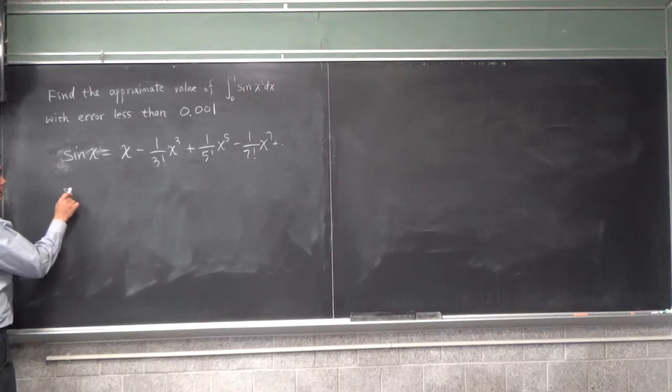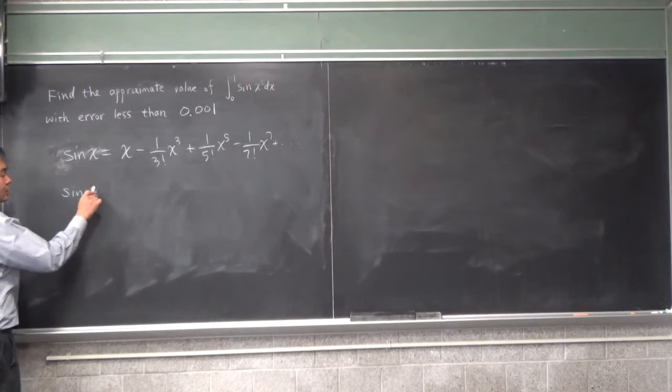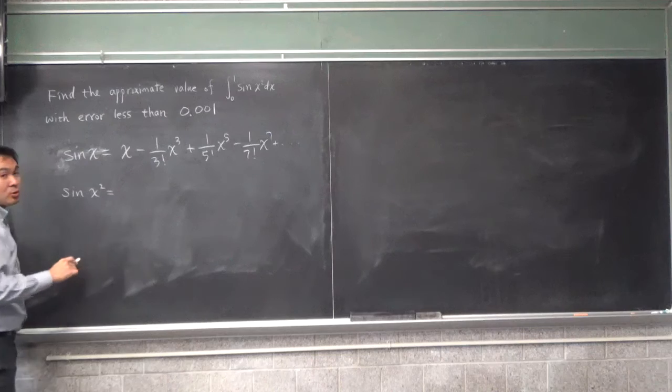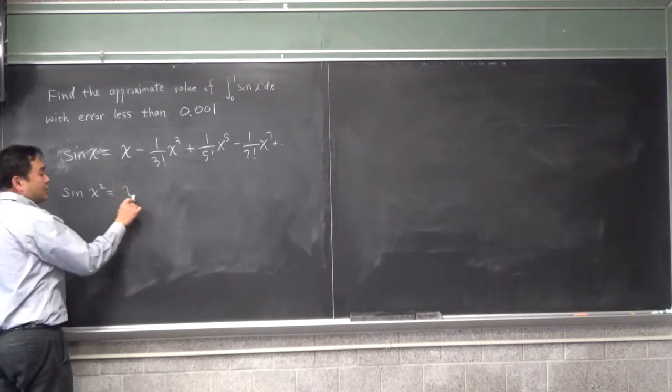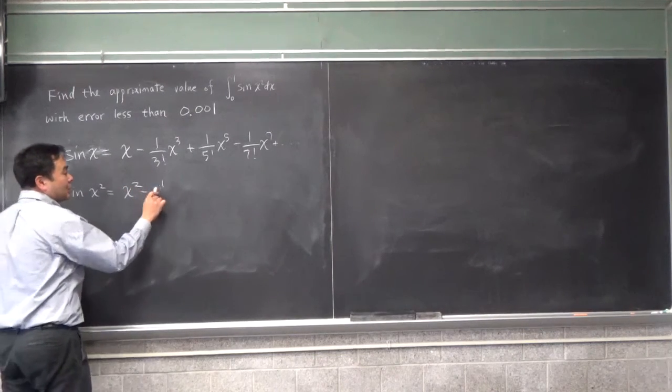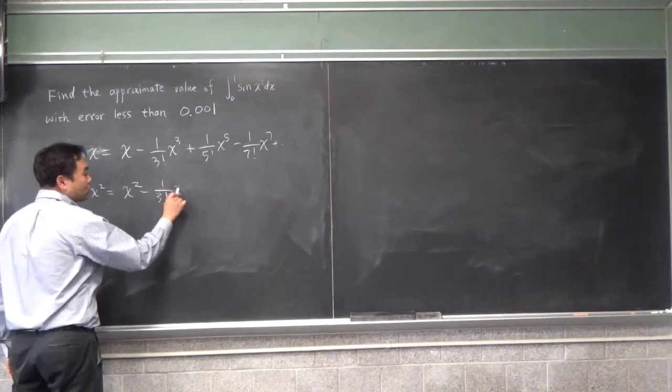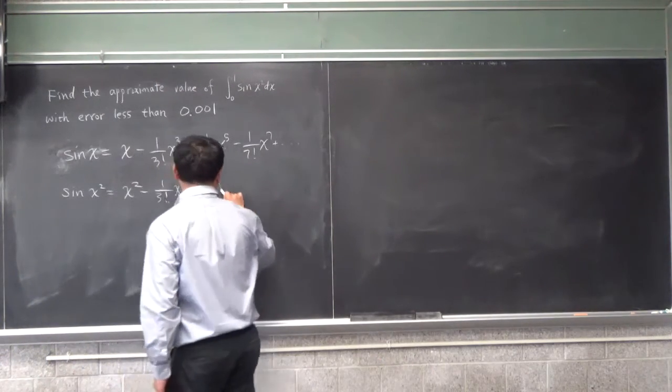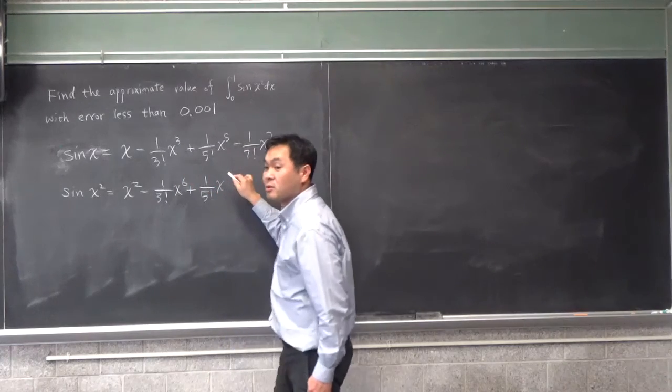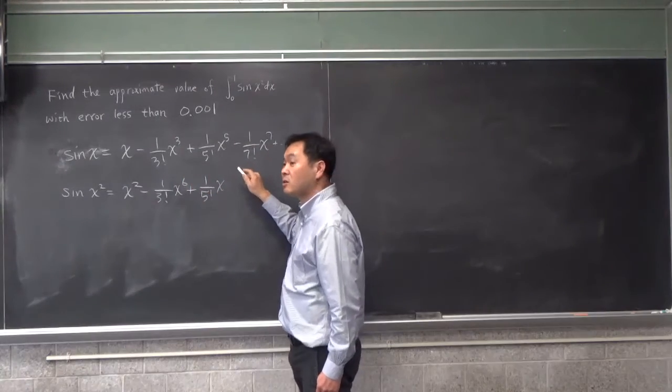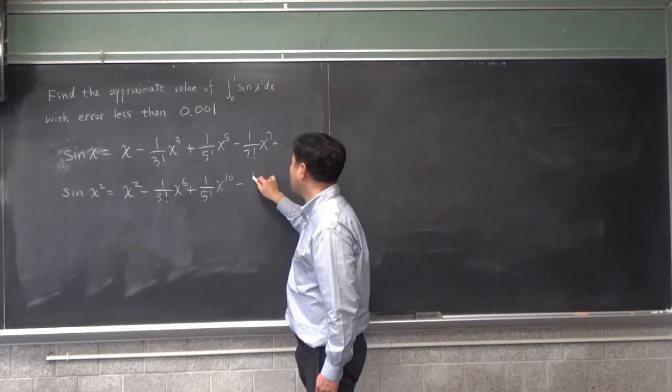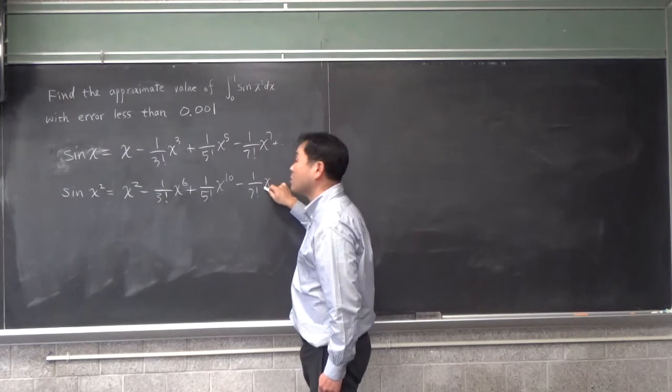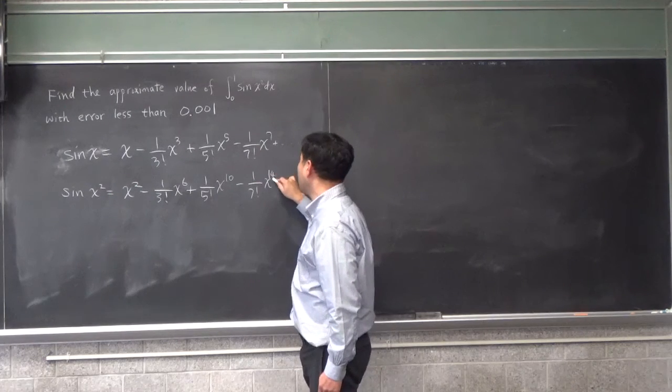Therefore, if you replace x by x², sin(x²) Maclaurin series would be x² minus 1 over 3 factorial x⁶ plus 1 over 5 factorial x¹⁰ minus 1 over 7 factorial x¹⁴.